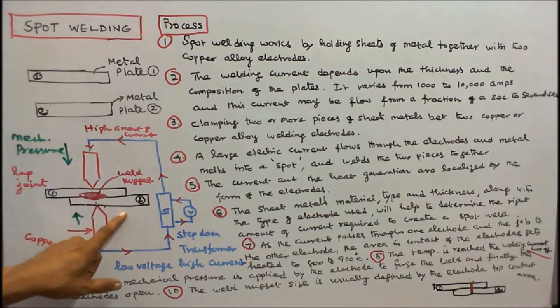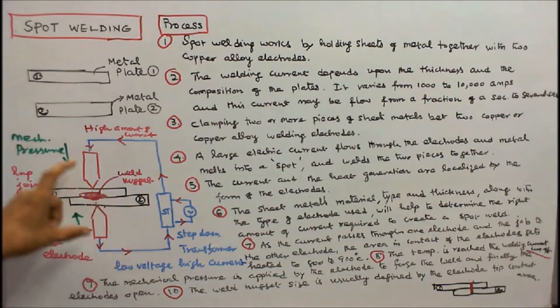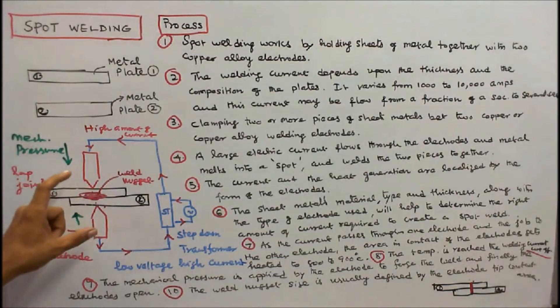The sheet metal's material type and thickness along with the type of electrode used will help to determine the right amount of current required to create a spot weld.